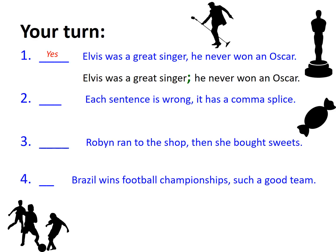Example two reads: 'Each sentence is wrong, it has a comma splice.' This also contains a comma splice. One answer is: 'Each sentence is wrong; it has a comma splice.' Another option is: 'Each sentence is wrong and it has a comma splice.'